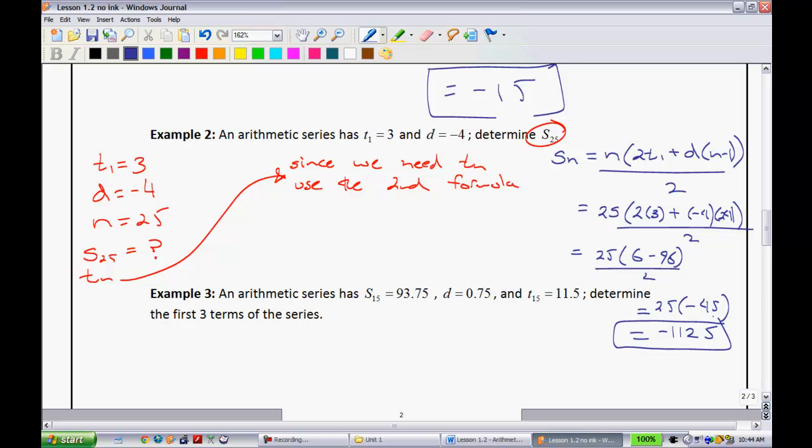And so what did we just figure out? We found out that when we had first term 3, a common difference of negative 4, that the sum of the 25 terms would be negative 1,125. So recall, this is an important example, number 2, that we want to use this second formula when we do not know what tn is. Two more examples.